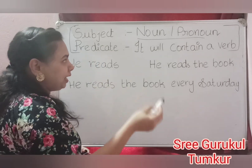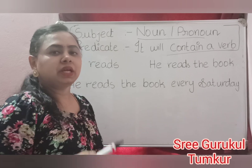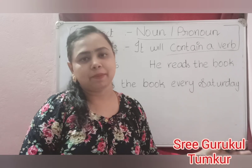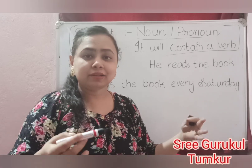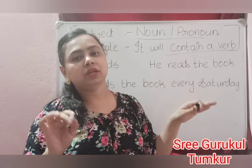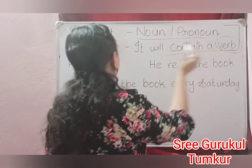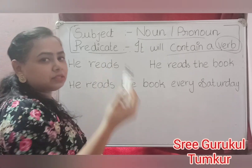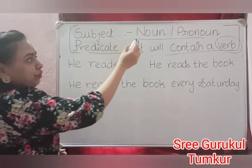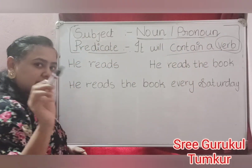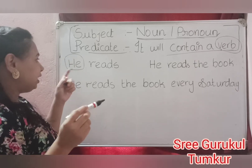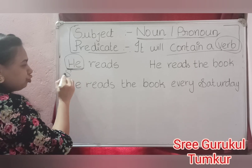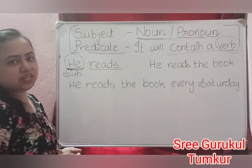Then what will be the predicate? Predicate means it will contain a verb. For example, if you are saying about a person or cat — the previous example was 'The cat is under the table.' So the cat is doing something — on that time we have a verb, and that part is called the predicate. So here is an example: 'He reads.' Find the subject and predicate. We know that if there is a noun or a pronoun, then it is a subject. Here there is a pronoun — 'he' — which indirectly denotes a person. So 'he' is the subject and 'reads' is obviously the predicate.